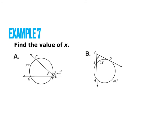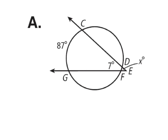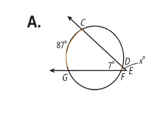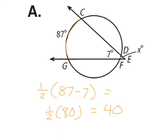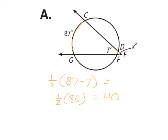In our next example, we take the intercepted arcs and subtract them. We have 87 minus 7, then multiply times one half. 87 minus 7 is 80. 80 times one half is 40. So the measure of angle X is 40 degrees.